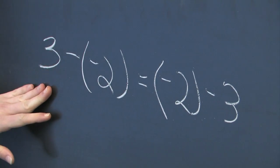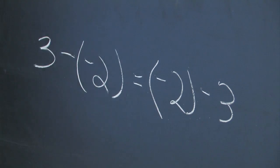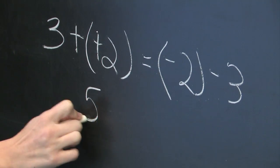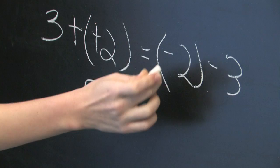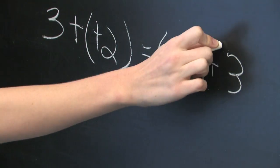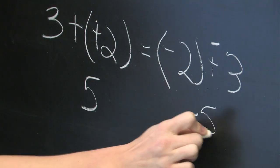So here 3 minus negative 2, we're going to add the opposite and get 5. And here minus 2 minus 3, add the opposite and get negative 5.